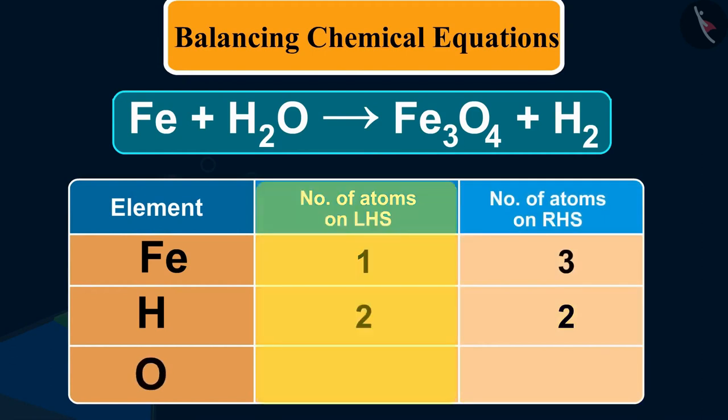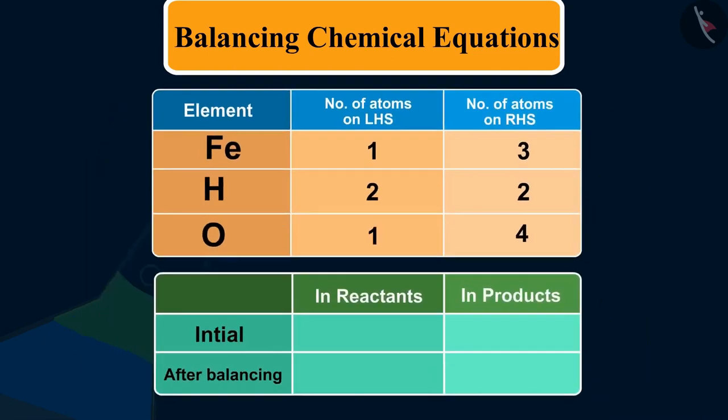oxygen atoms which is 1 on LHS and 4 on RHS. It is often convenient to start balancing with the compound that contains the maximum number of atoms.